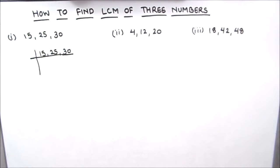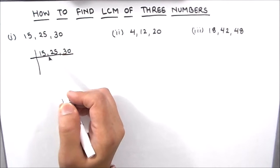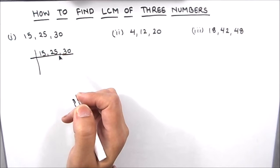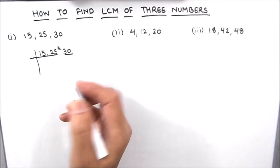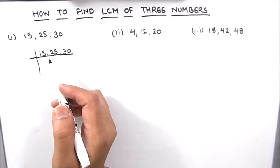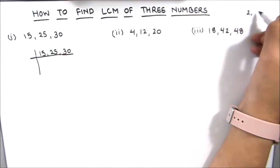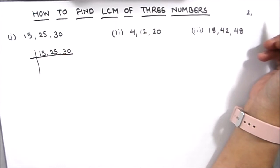For finding the LCM of the three numbers, we are going to use the prime factorization method, where we are going to divide the three numbers by their prime factors. Factors are numbers which divide the numbers fully without leaving a remainder. So I am going to write the first few prime numbers here on the right hand side of the board so that it is easy for us in our prime factorization method.